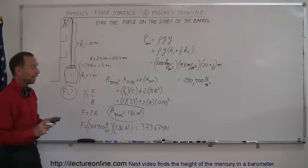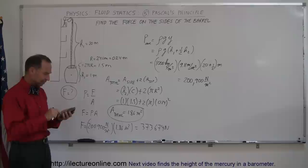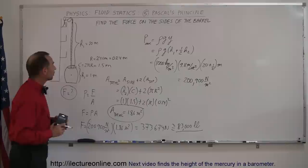How much is that? Because we don't have much of a concept of newtons. It's roughly about 4.5 newtons per pound, so if we take that and divide by 4.5, it gives us 83,000 pounds.